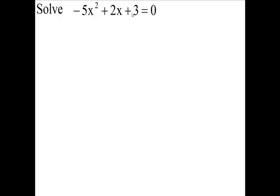Solve negative 5x squared plus 2x plus 3 equals 0.